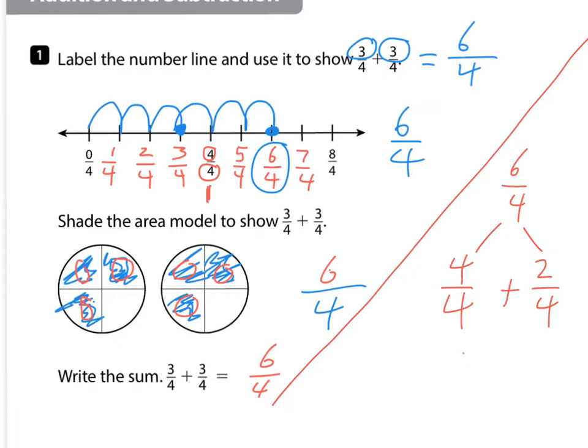Alright, and I know 4 fourths is 1 whole plus 2 fourths. We now have a mixed number. 1 and 2 fourths.